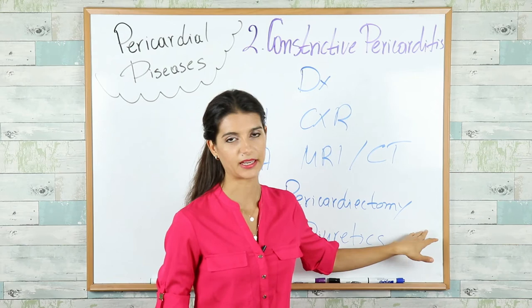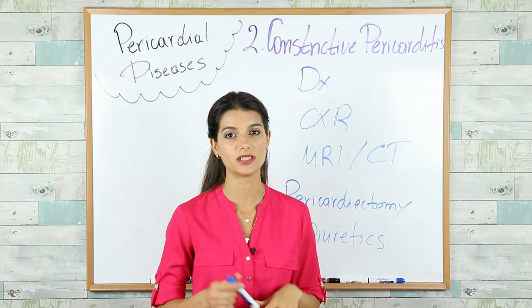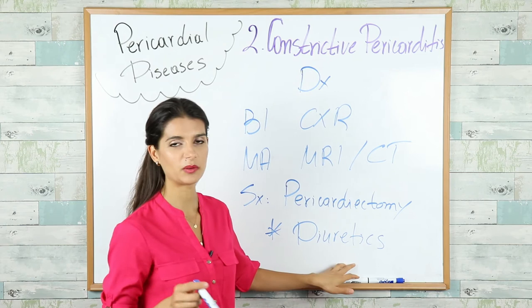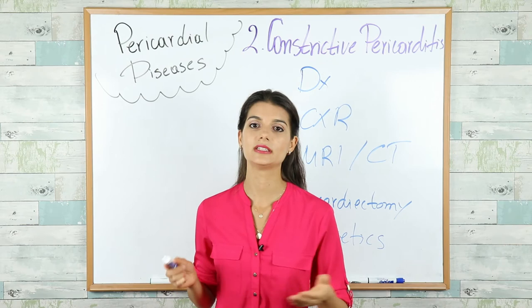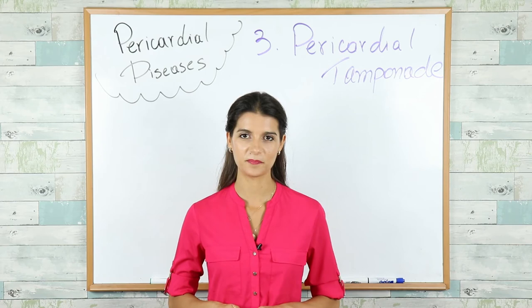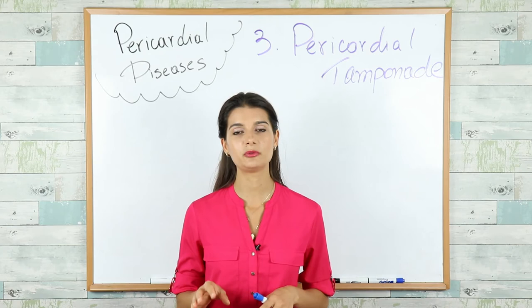Very importantly, you can give diuretics before performing surgery to relieve symptoms of fluid overload. Now let's discuss pericardial tamponade. It's basically fluid accumulation between the two main layers of the pericardium — the outer fibrous layer and the inner serous layer.